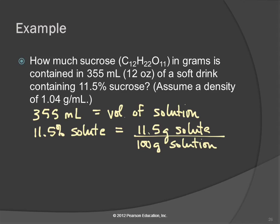What does percent mean? Per 100. So 11.5% means 11.5 grams of solute per 100 grams of solution. And that right there is the piece that most students miss. 11% is 11 grams per 100 grams. Very important to remember that. And what are we trying to find? Grams of sucrose, which is the solute. We want grams of solute.